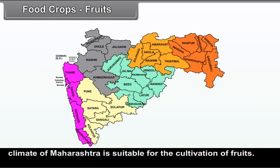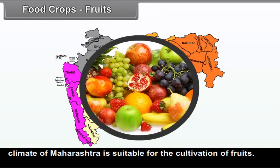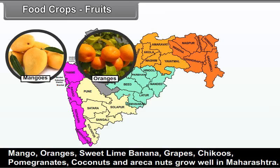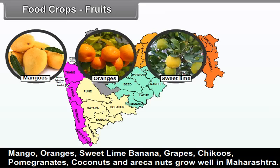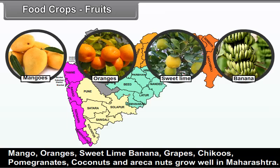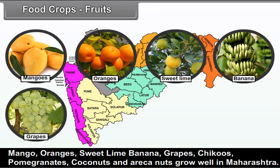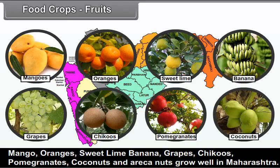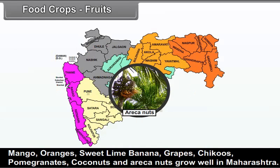Fruits: The climate of Maharashtra is suitable for the cultivation of fruits. Mango, oranges, sweet lime, banana, grapes, chikus, pomegranates, coconuts, and areca nuts grow well in Maharashtra.